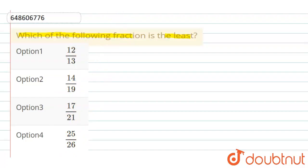Now, what are the fractions given? First option is 12 upon 13. Second option is 14 upon 19. Third option is 17 upon 21. Fourth option is 25 upon 26.